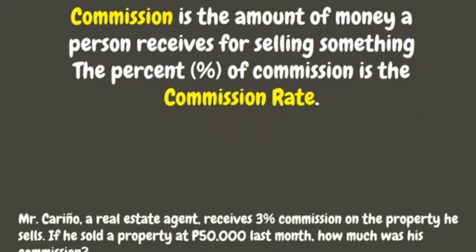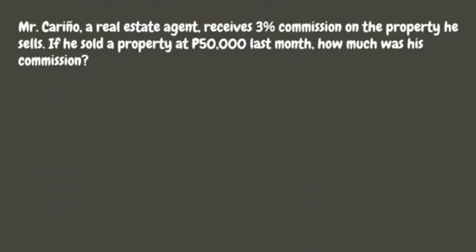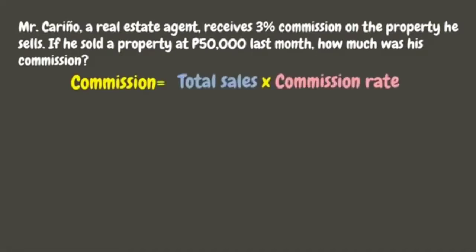Now, let's try to solve our problem. To solve for the commission, we need to multiply the total sales and the commission rate. Here, the total sales is fifty thousand pesos, while the commission rate is three percent. Before we multiply, we need to change the percent into decimal. Let's change the percent sign into a decimal point and move the decimal point two times to the left.